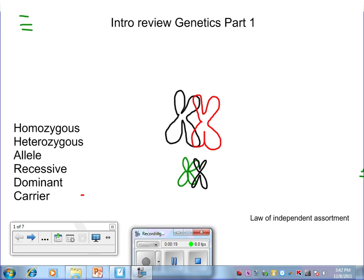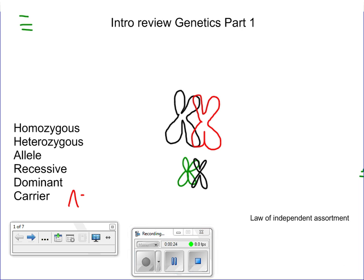I think the only one that sometimes trips up people is the carrier component. Remember, carrier is that you don't express the disease, but you're carrying the allele that is for the disease. Heterozygous, homozygous, we're talking about whether the alleles are the same for the individual. Dominant recessive, that was Mendelian genetics where the dominant will mask over the recessive.